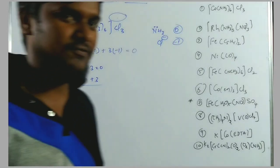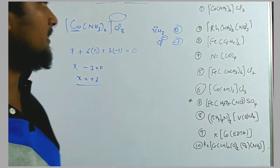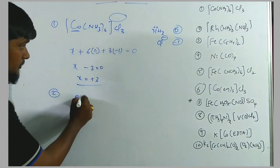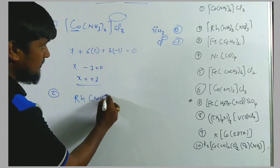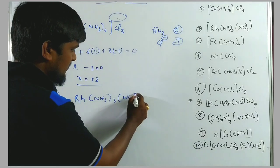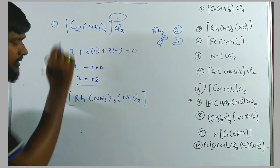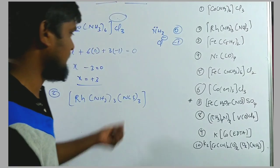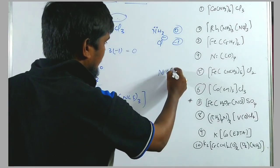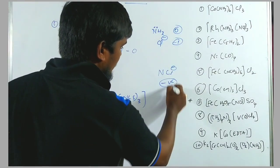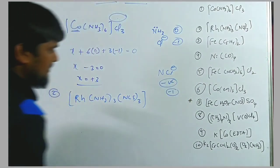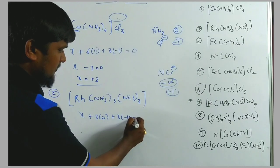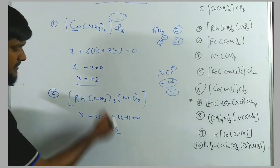Second example: [Rh(NH₃)₃(NCS)₃]. NCS⁻ belongs to the NCS minus category — a monodentate negative ligand with charge −1. So: X + 3(0) + 3(−1) = 0, therefore X = +3.